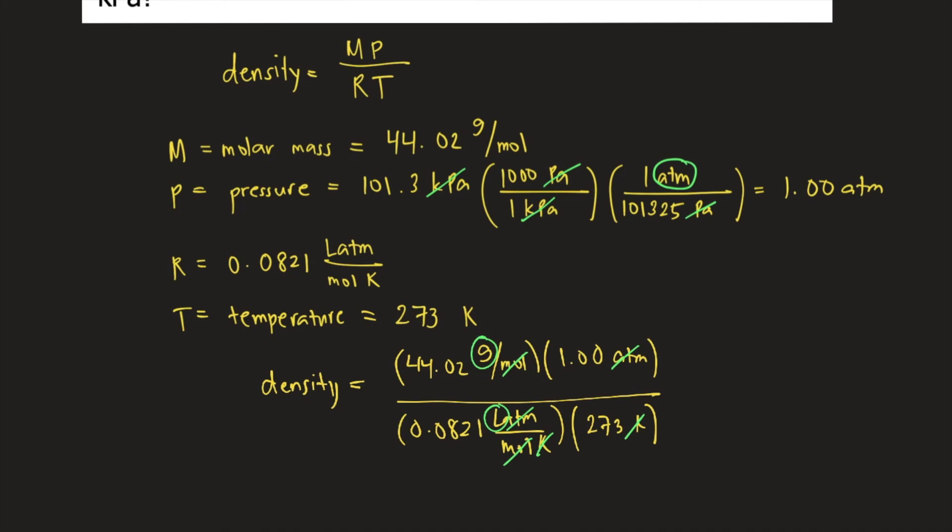If you plug this into your calculator, the answer for density is equal to 1.96 grams per liter. This is the answer to the question.